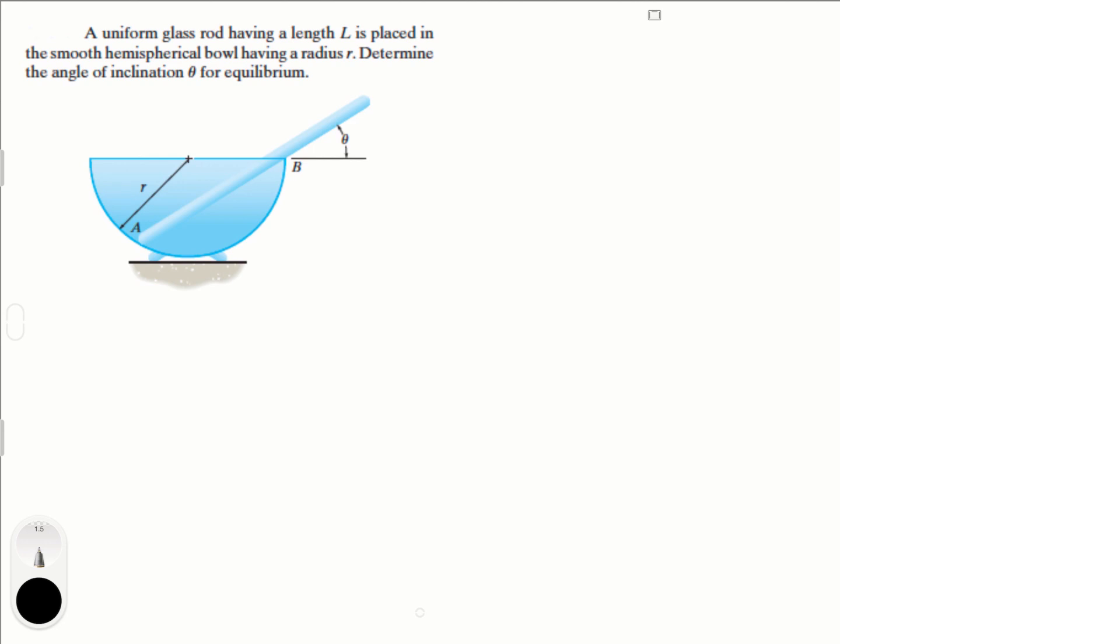Alright guys, this problem says a uniform glass rod having a length L is placed in the smooth hemispherical bowl having a radius R. Determine the angle of inclination of theta for equilibrium. So this problem is a little bit of a lot of math and you really got to be organized to be able to figure this one out, but I'm going to diagram it for you.